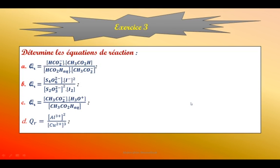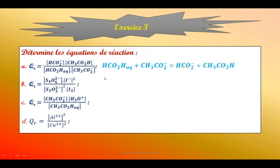Exercice 3 : déterminer les équations de réaction. Pour le quotient de réaction, on a les produits sur les réactifs. Les réactifs sont ceux qui se trouvent en dénominateur. Il est nécessaire d'ajouter des coefficients de proportionnalité. La même chose pour la seconde équation : produits sur réactifs.